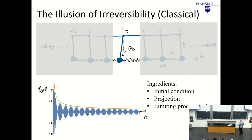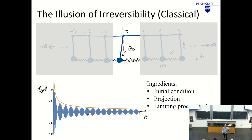This is all good, but this is classical. When I did that projection, I used the fact that classical variables can be ignored very easily. Let's think about what happens when we go to the quantum mechanical case.